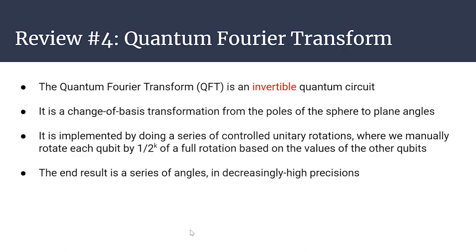To summarize the QFT: it's an invertible quantum circuit and a change of basis from the computational basis (binary numbers at the poles) to the Fourier basis (angles in the plane). If operating on just one qubit, it would only be the Hadamard gate — you could think of QFT as an extension of the Hadamard gate to a multiple-qubit system. We're operating on a superposition of all numbers 0 through 15 at once, and the QFT applies its transformation to all of them simultaneously. Pause if needed before we move on.